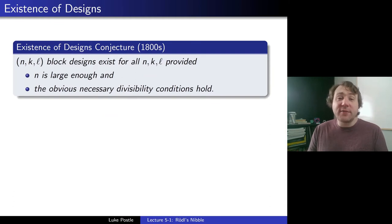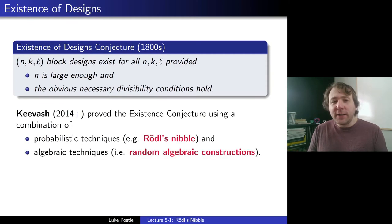More generally, there's this existence of designs conjecture. The (n,k,ℓ) block designs exist for all n,k,ℓ, provided that n is large enough and the obvious necessary divisibility conditions hold. And while things were known beyond the graph case, such as things about ℓ=3, not much was known for higher ℓ, until Keevash just recently, starting in 2014, proved the existence conjecture using a combination of probabilistic techniques, for example Rödel's nibble, and algebraic techniques.